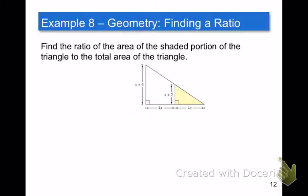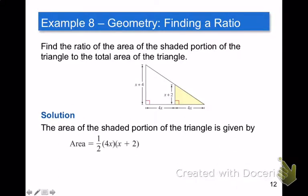Application happens when you try to write a ratio of something. Find a ratio of the area of the shaded portion of the triangle to the total area of the whole triangle. So the first thing we got to do is find the area of the shaded portion. Remember, area of a triangle is 1 half base times height. So here's the base, it's 4x, here's the height, x plus 2. That's why they multiplied 1 half times 4x times x plus 2.